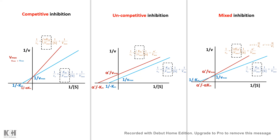For mixed inhibition, since Vmax has decreased there is a change in slope — the new slope is α·Km/Vmax — making the lines steeper. The lines meet at a point away from the y-axis. Depending on the values of alpha and alpha-dash, the apparent Km could increase or decrease. In summary, for mixed inhibition, Vmax always decreases but the apparent Km can increase or decrease.